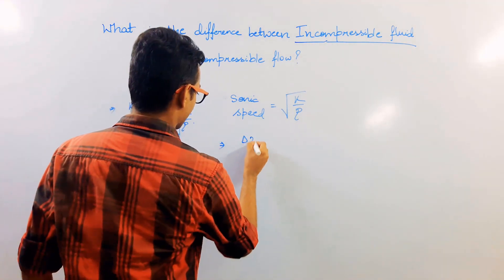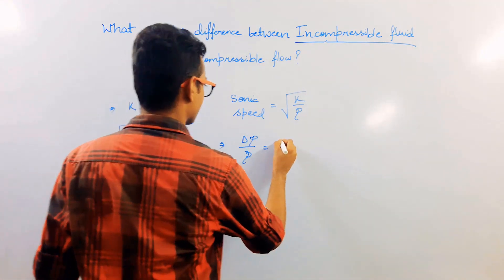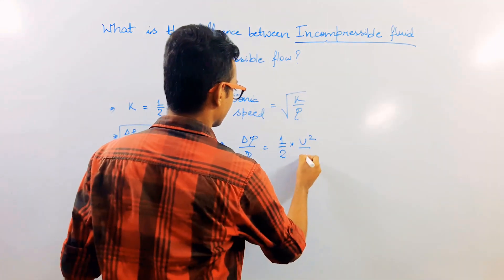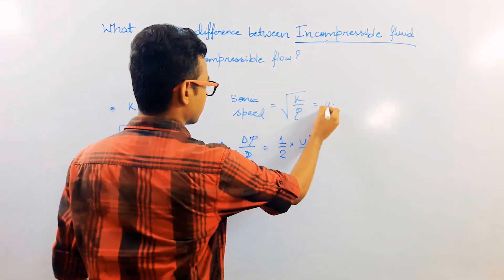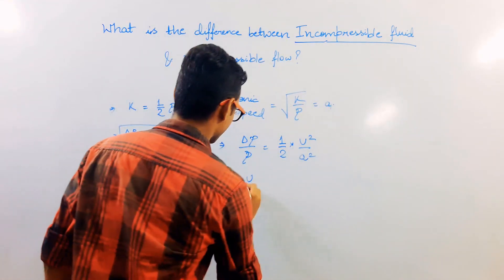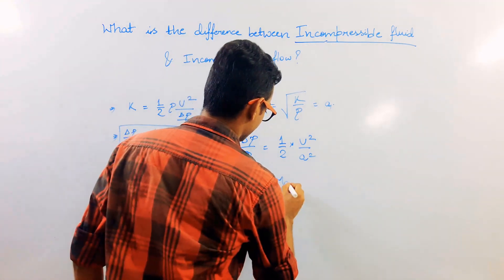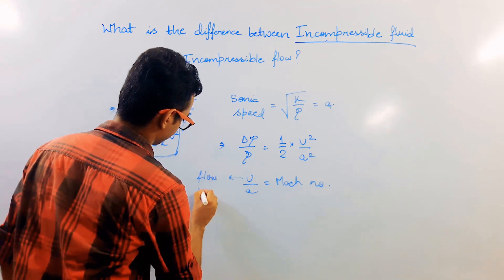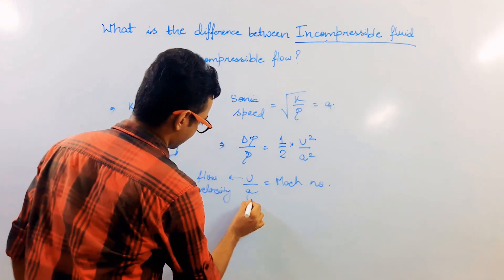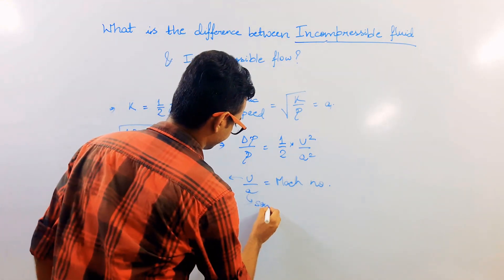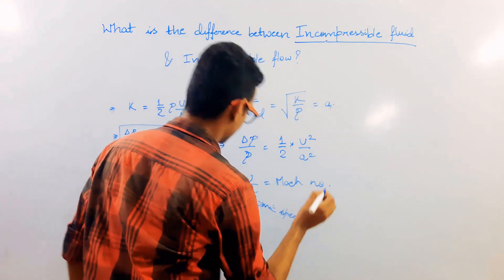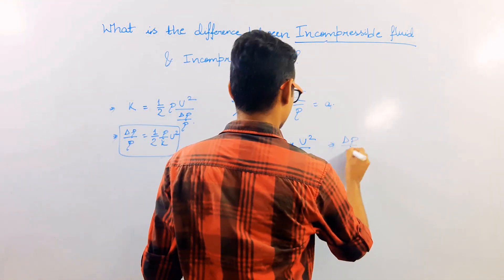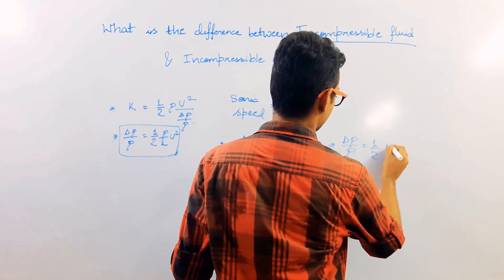So further, I can write: Δρ/ρ equals ½ · u²/a², where a is the sonic speed. This ratio u/a is called the Mach number, where u is the flow velocity and a is the sonic speed. So I can now write: Δρ/ρ equals ½ · Ma².